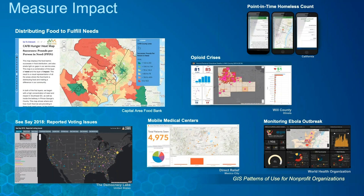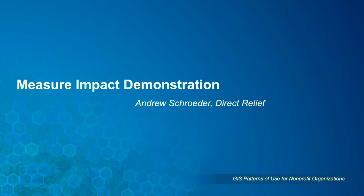Examples of nonprofits leveraging GIS to measure impact include Capital Area Food Bank, measuring pounds of food delivered across Washington DC and using GIS to identify communities where they're meeting demand and where there are gaps. Democracy Labs uses field mobility apps and crowdsourcing to monitor and report incidents of voter suppression. And there are many examples of organizations using GIS to monitor disease outbreaks and track the effectiveness of their efforts. I'd like to turn it over to Andrew Schroeder of Direct Relief to show how they've been using GIS to measure impact.